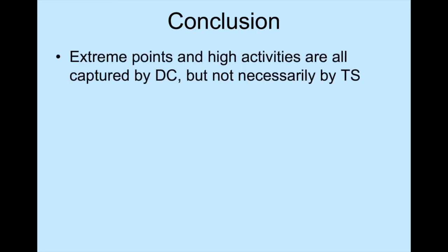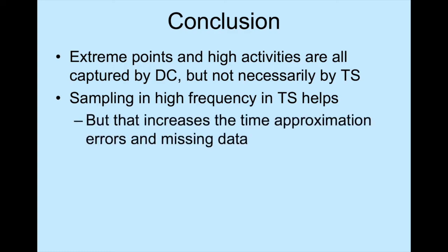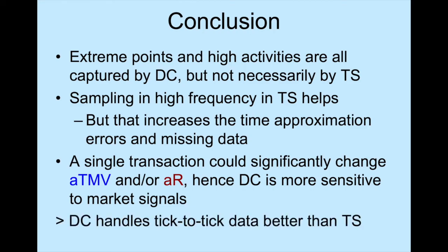To conclude, extreme points and high activities are all captured by directional change, but not necessarily by time series. Sampling at higher frequency in time series helps, but that increases the time approximation errors as well as missing data. A single transaction could significantly change ATMV and AR. Hence, directional change is more sensitive to market signals. For these reasons, we argue that directional change is more suitable for handling tick-to-tick data than time series.